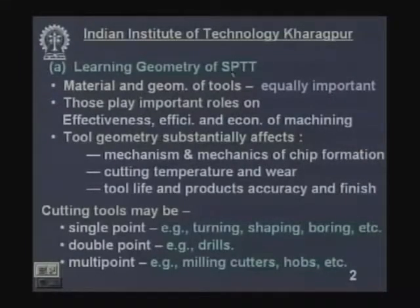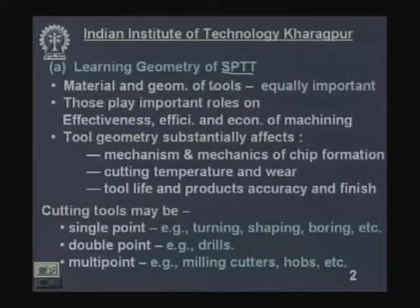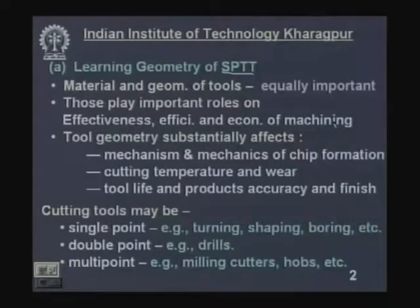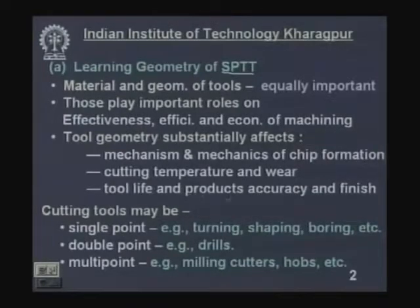Now let us go back to class. We start with the geometry of SPTT — single point turning tool. We should remember that material and geometry of cutting tools are very, very important and both are equally important for machining, machinability, and machining economy. Tool geometry and tool material play important roles in effectiveness, efficiency, and economy of machining. Tool geometry substantially affects the mechanism and mechanics of chip formation — that is, cutting forces, cutting temperature, tool wear, tool life, and product accuracy and finish.